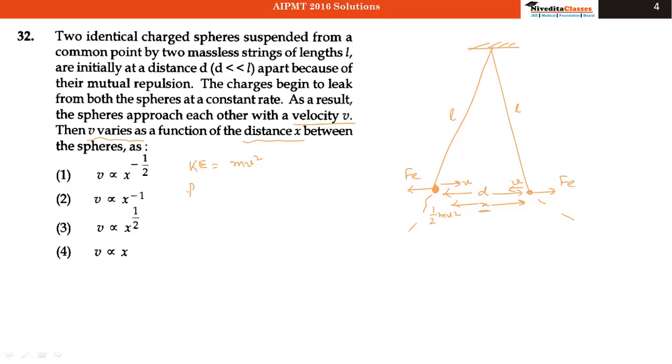And if I talk about electrostatic potential energy, that can be given by k. Let's say the instantaneous charge is Q. So kQ into Q, that is kQ squared divided by distance X. So this total energy of the system has to remain constant.